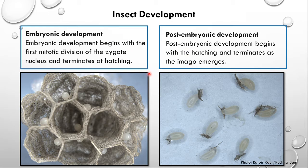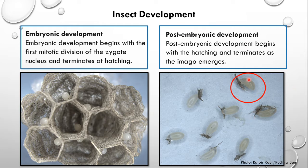To understand this concept, let us take the help of this picture. This is a small wasp nest where the mother wasp has laid the eggs. If I take out the contents of these cells, then I can see the eggs. But if you look carefully, this one looks a little different - because here the larva has hatched from the egg. So in some cells the embryonic development is continuing, whereas in this one the post-embryonic development has begun.